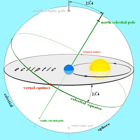If the equator is projected outward to the celestial sphere, forming the celestial equator, it crosses the ecliptic at two points known as the equinoxes.